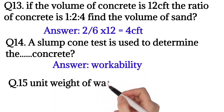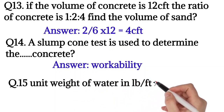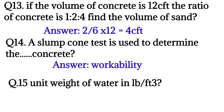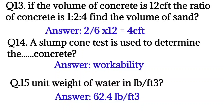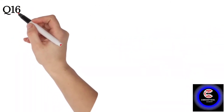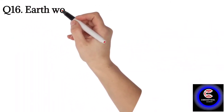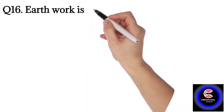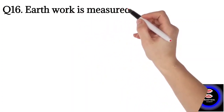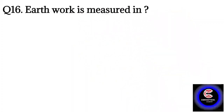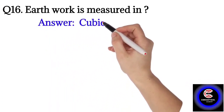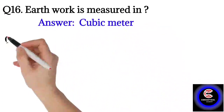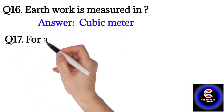Question number fifteen: the unit weight of water in pounds per cubic feet. The answer is 62.4 pounds per cubic feet. Question number sixteen: earthwork is measured in cubic meters, so the answer is cubic meter.